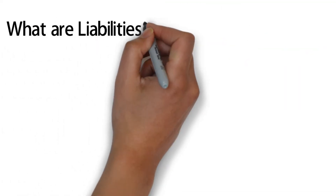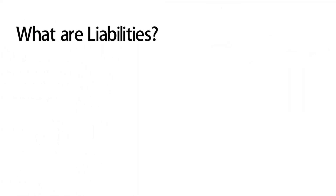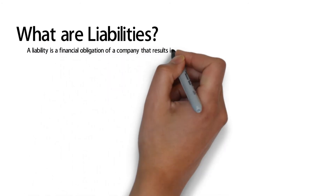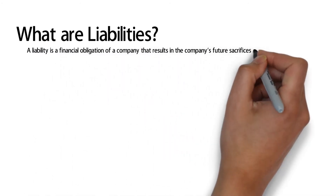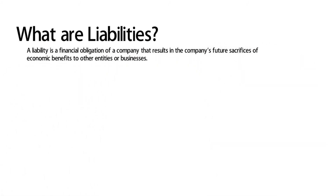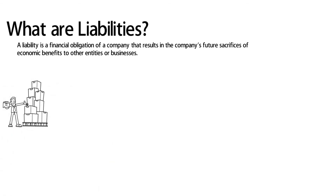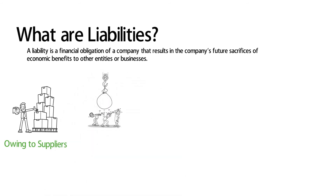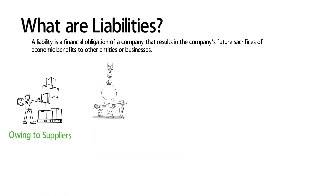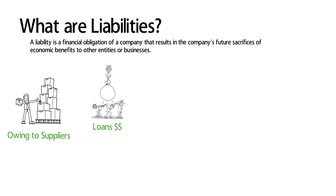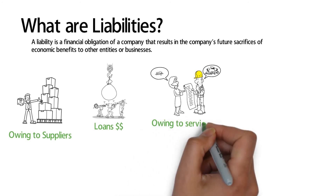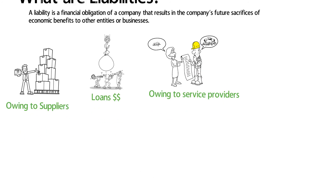What are liabilities? A liability is a financial obligation of a company that results in the company's future sacrifices of economic benefits to other entities. If you have bought your inventories, you owe to your suppliers. If you have taken a loan, you owe to your bank or lender. If you have taken services, you owe to your service providers.